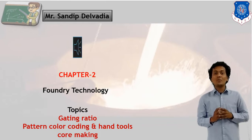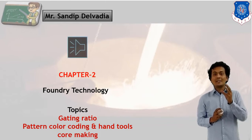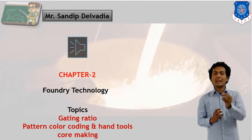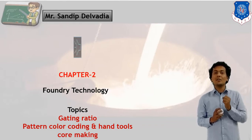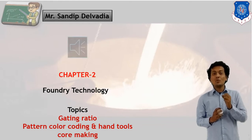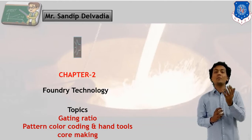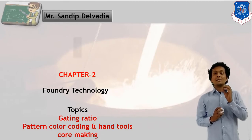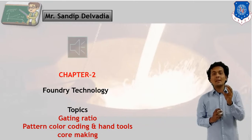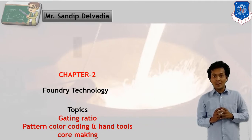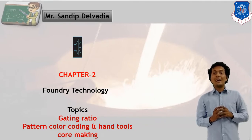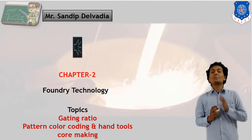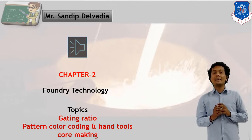What is the purpose of the Gating System? The Gating System is used to let the liquid metal flow into the cavity, and the whole system is used for solidification of the final product. In other words, the Gating System is a simple system used for making a casting product. In the Gating System, there will be one Gating Ratio. Let's start our discussion on Gating Ratio.